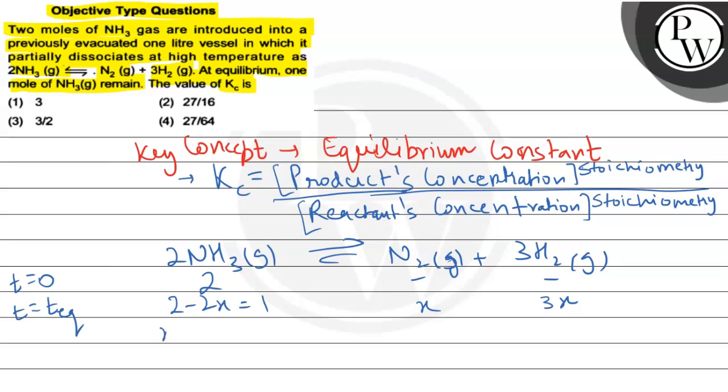Here the x value we are talking about is 0.5. Nitrogen gas, how much? 0.5. And hydrogen gas, 3 times 0.5, that will be 1.5. Values have been placed.